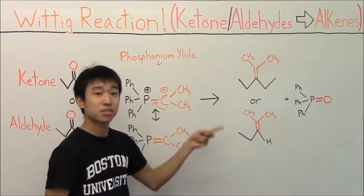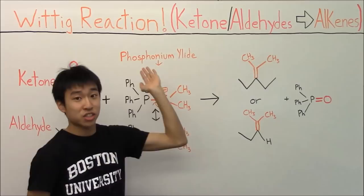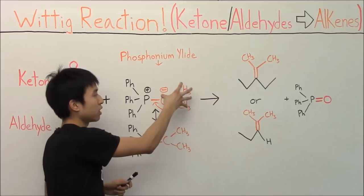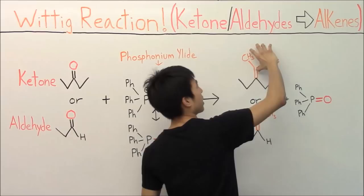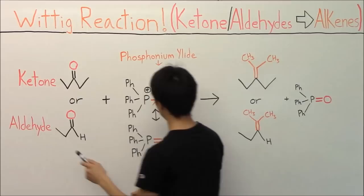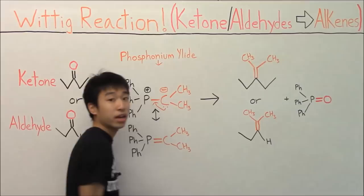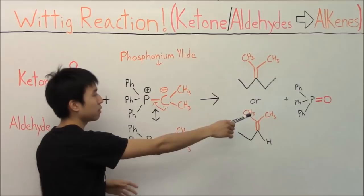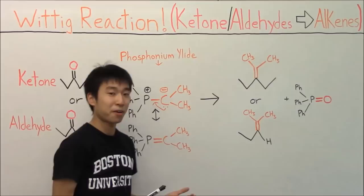Did you guys get alkenes for your mysterious product? The Wittig reaction turns ketones and aldehydes into alkenes. If you're starting off with a ketone, all that happens is that the carbon chain of your phosphonium ylid gets transported onto your ketone right here. The same is true for the aldehyde — the carbon chain gets transported onto the aldehyde and now you have alkenes as your final products. Furthermore, the oxygen gets removed and ends up double-bonded with your phosphorus in the form of a phosphine oxide.